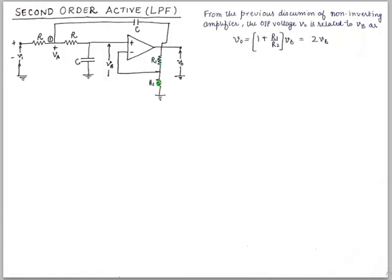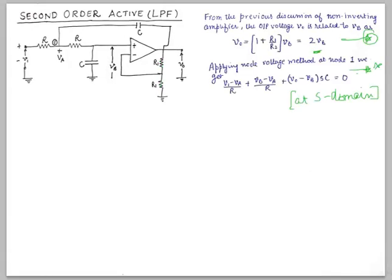Secondly, we can see that applying node voltage method at this node 1, what we get here is (V1 - Va)/R + (Vb - Va)/R + (V0 - Vb)·SC = 0. So now this introduction of S here, this S domain introduction, has come courtesy this capacitor. This capacitor is the one which is responsible for introducing this S component.